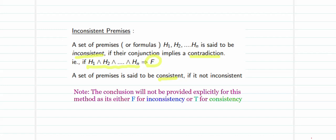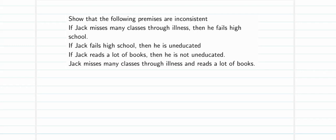The problem says: show that the following premises are inconsistent. They have given us the set of premises alone — no separate conclusion. The premises are: if Jack misses many classes through illness then he fails high school; if Jack fails high school then he is uneducated; if Jack reads a lot of books then he is not uneducated; Jack misses many classes through illness and reads a lot of books.